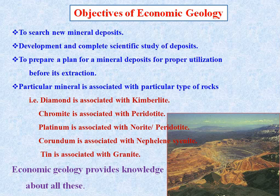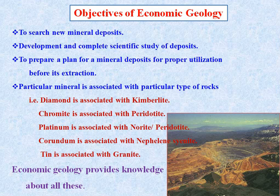A particular mineral in nature is associated with particular types of rocks. For example, diamond is associated with kimberlite, chromite is associated with peridotite, platinum is associated with norite or peridotite, corundum is associated with nepheline syenite, and tin is associated with granite. Hence, we can say that there is a genetic relationship of minerals with particular types of rocks. Economic geology provides detailed knowledge about the assemblage of minerals in a particular type of rock.